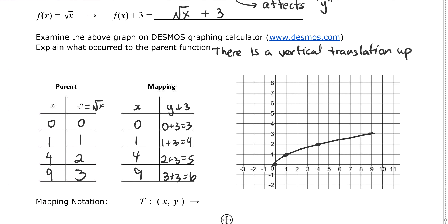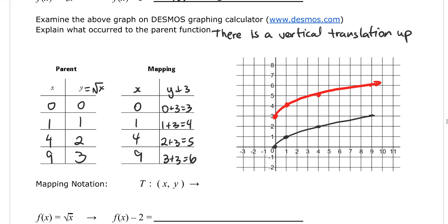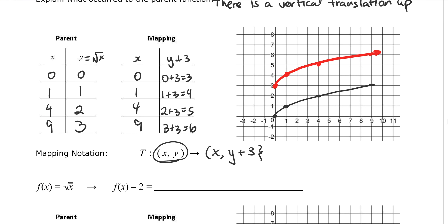Now I'll graph the transformed function. So the new points are (0,3), (1,4), (4,5), and (9,6). You can see the graph of y = √x has shifted upward by 3 units. When describing transformations, we use mapping notation to describe what happens to the parent graph coordinates. The parent coordinate (x, y) transforms to (x, y+3) — x doesn't change, but the y coordinate increases by 3.